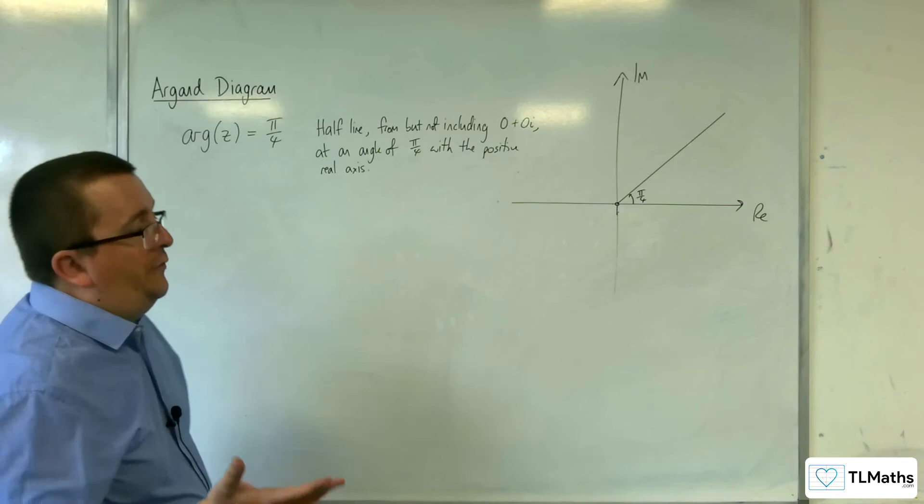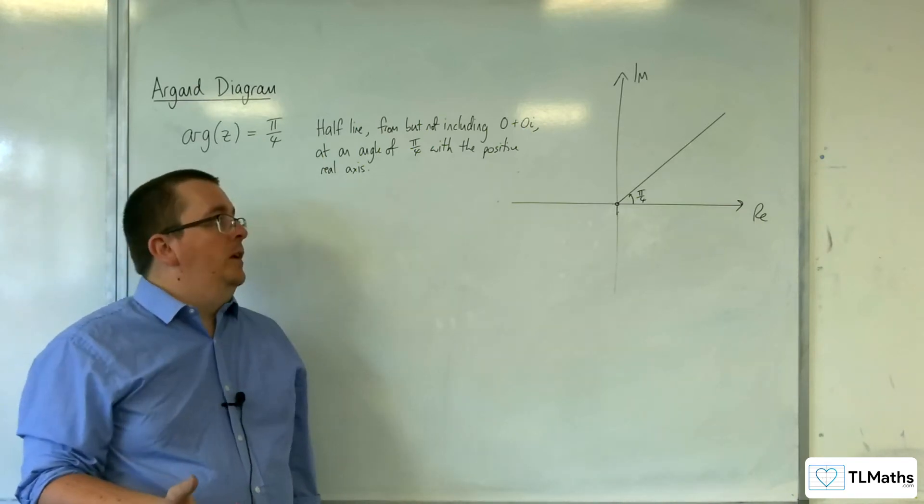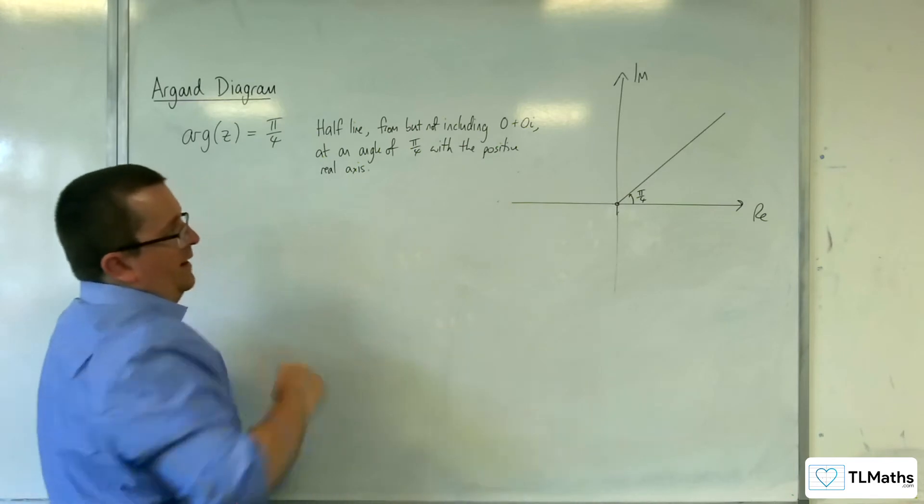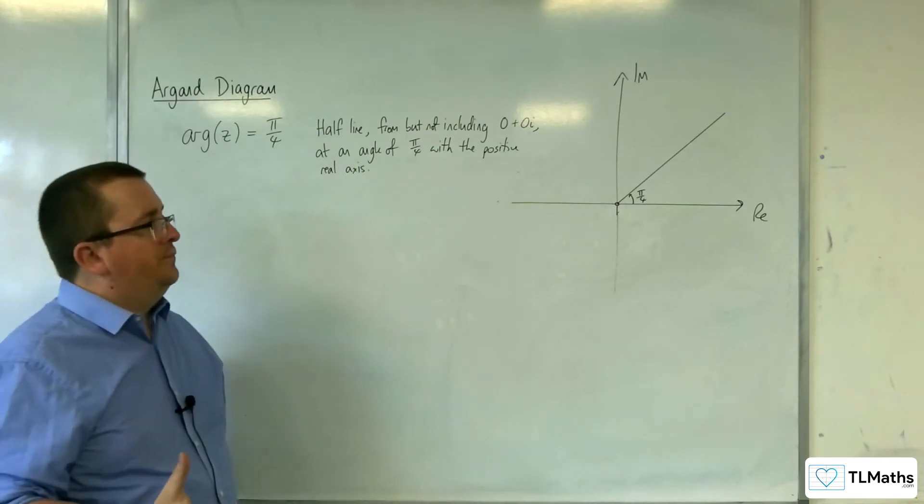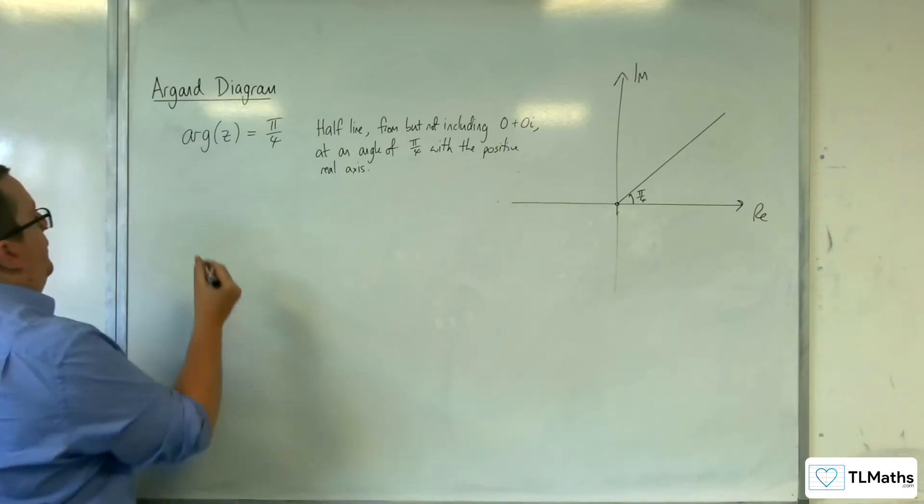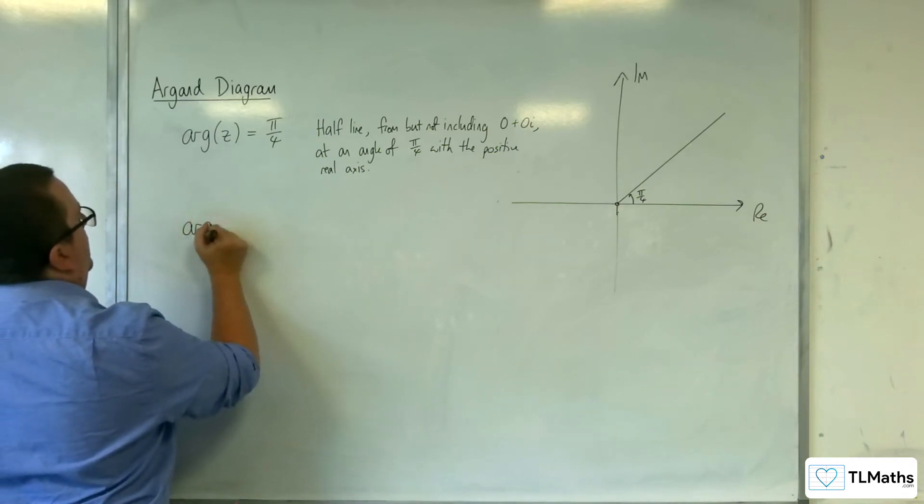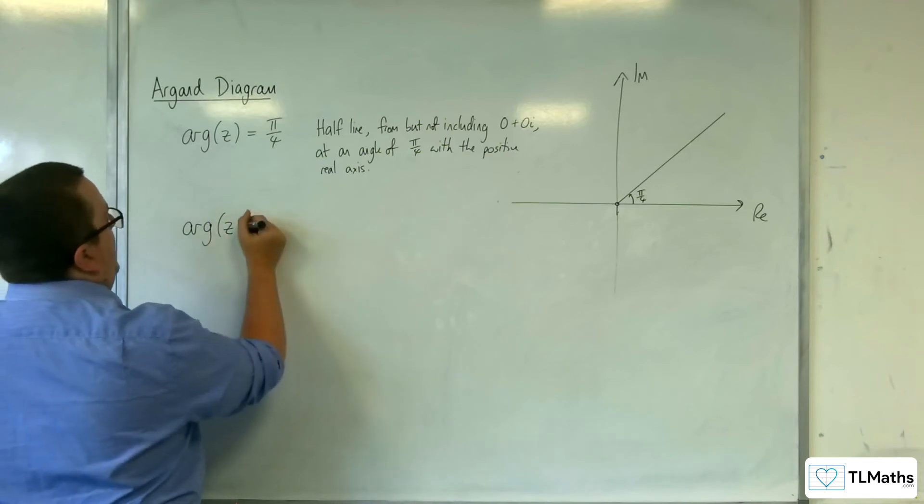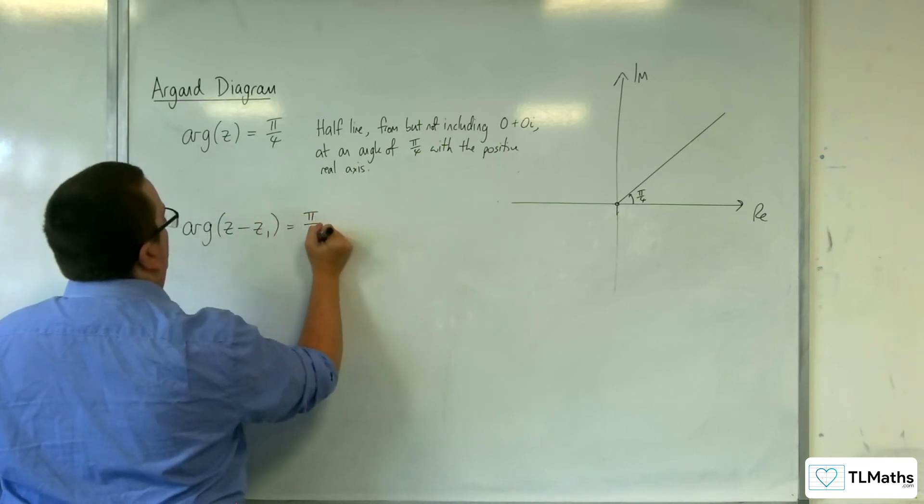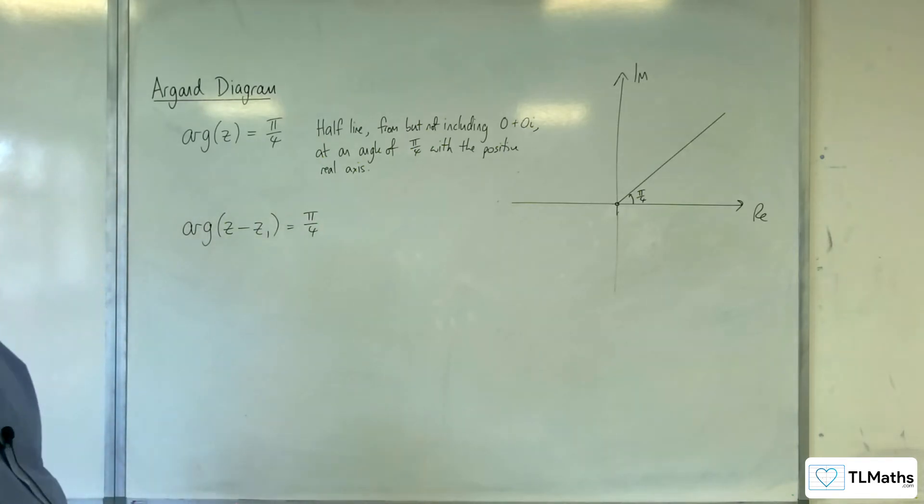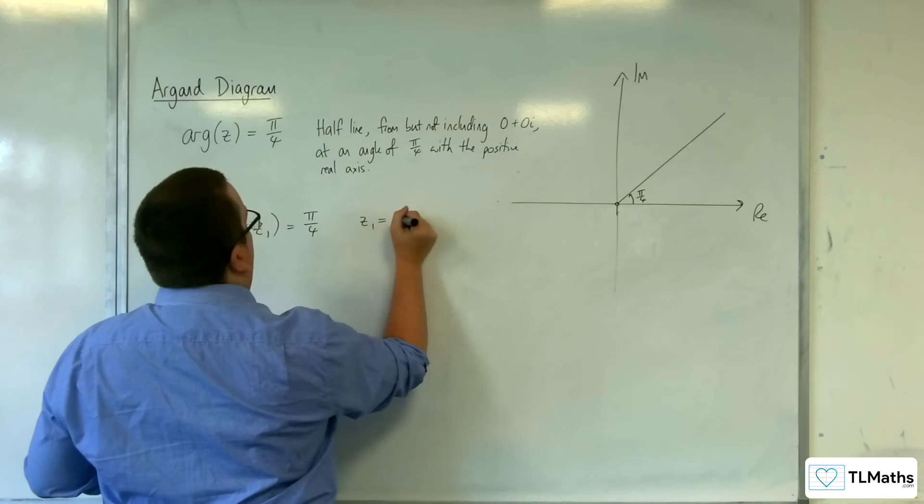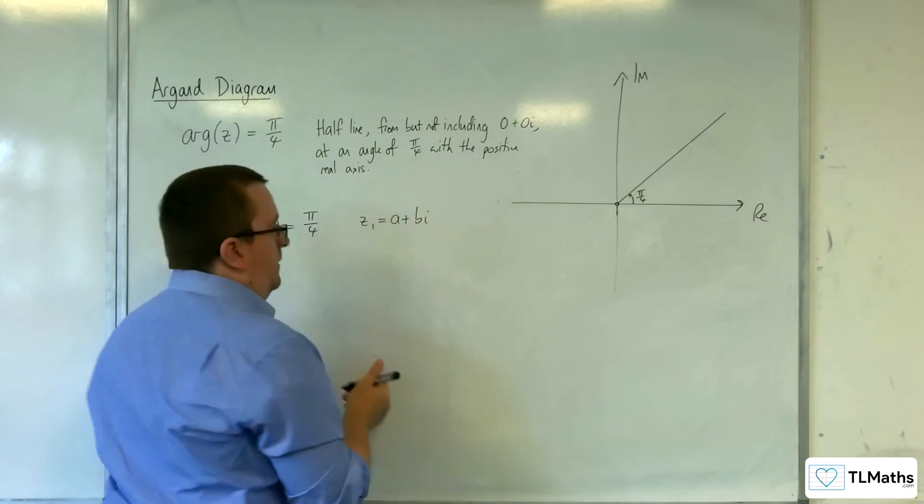Now, back when we were doing circles a few videos ago, we then were able to pick up and move our circle to any point on the Argand diagram that we'd like to center it. You can do precisely the same with this as well. Now, so if I replaced the z with z take away z1, equals pi over 4. And let's say z1 is equal to a plus bi.